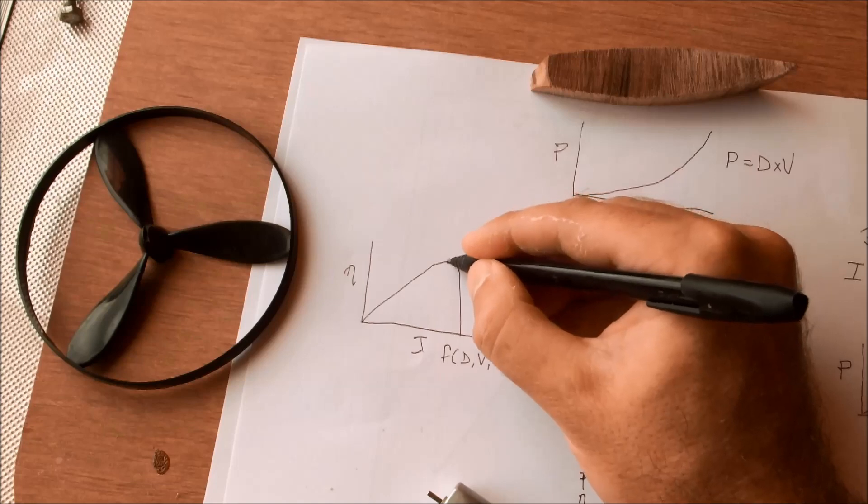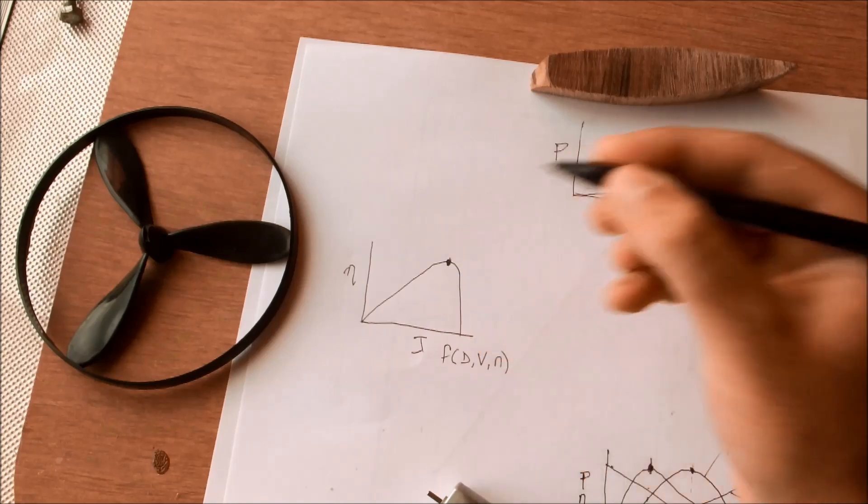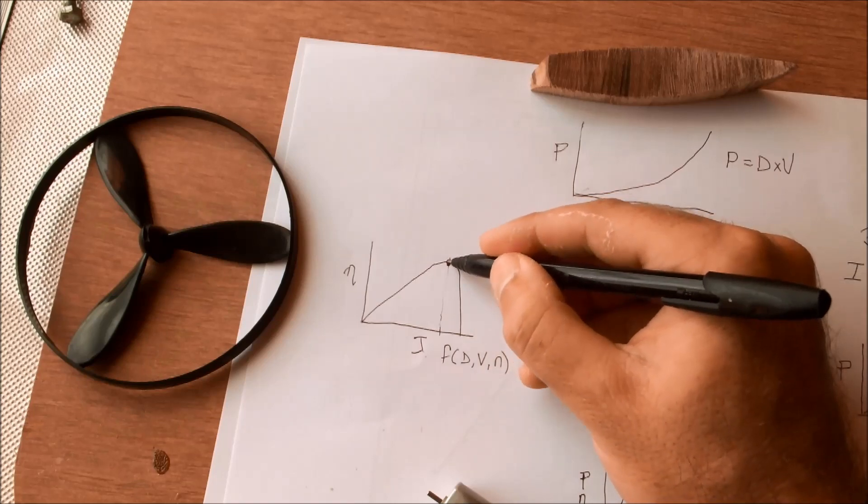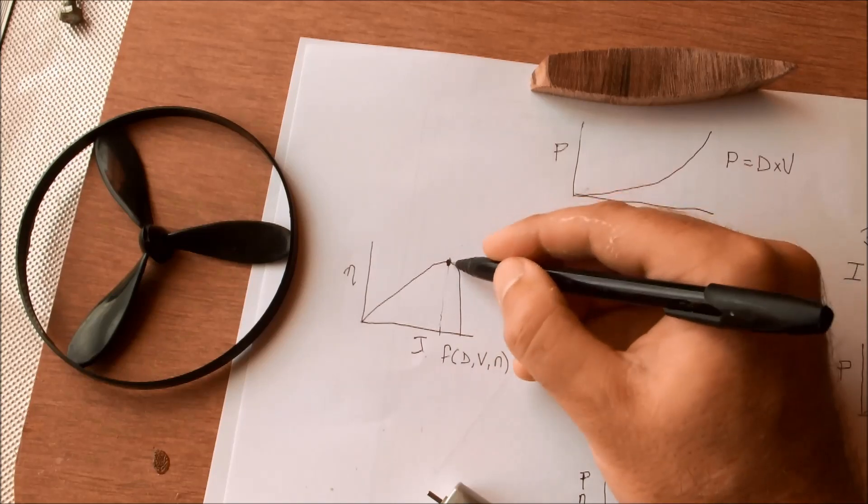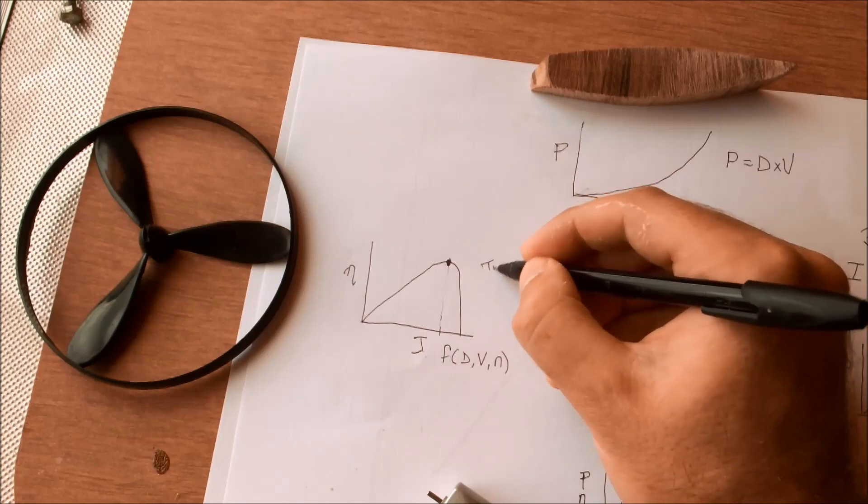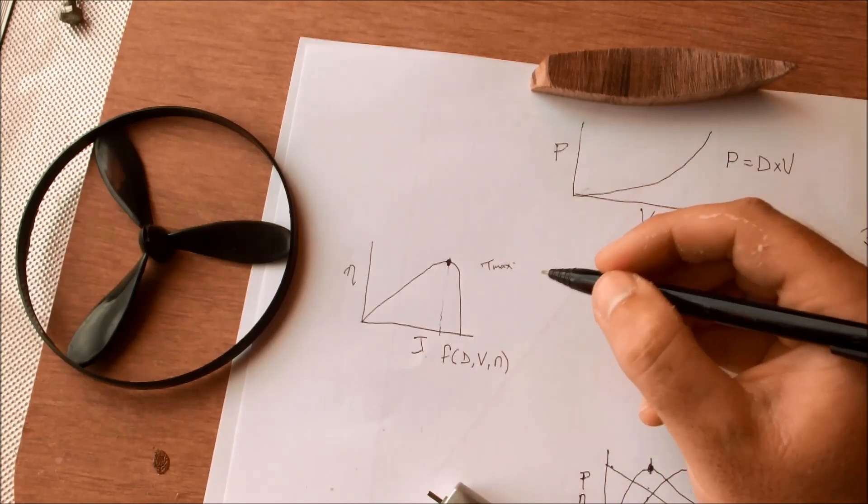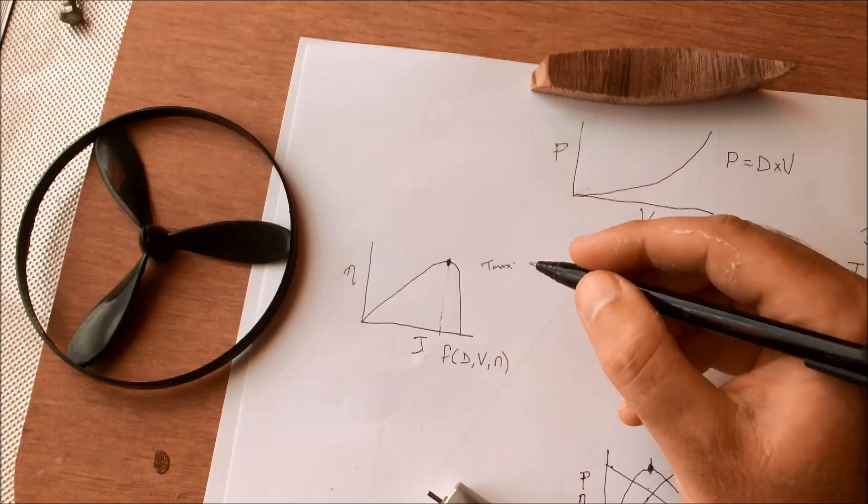For a propeller once again you only have one particular operating point at which you get maximum efficiency. That would correspond to a specific maximum thrust for that given rotational velocity.